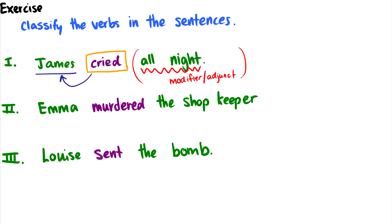What about 'Emma murdered the shopkeeper'? Well, 'murdered' is our verb. There is someone doing the murdering, which is Emma. And then there is something being murdered, which is the shopkeeper. So someone is murdering someone, which means there are two arguments here. So this is transitive. And I'll write the first one as intransitive, just to make it very clear.